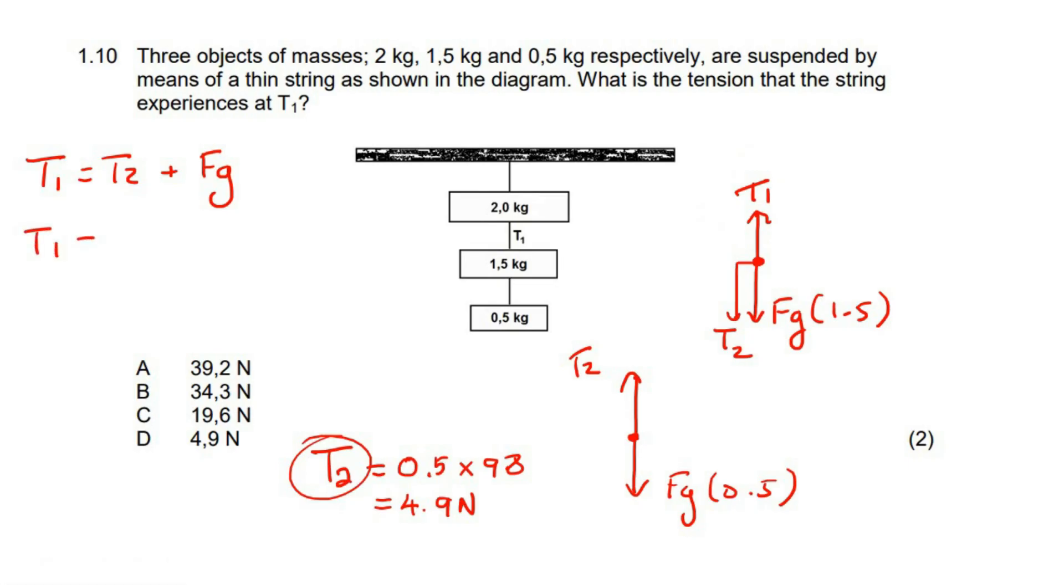So we can say T1 then is going to be equal to T2, which is 4.9, plus the FG of this object, which is 1.5 multiplied by 9.8, and so that will be 19.6 newtons. So the answer is C.